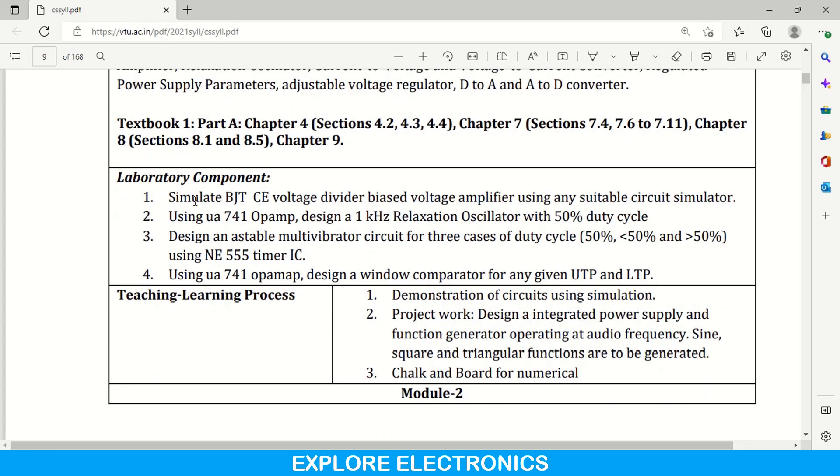And laboratory component is given here. Simulate BJT common emitter voltage divider biased voltage amplifier using suitable circuit simulator. Here we are supposed to use any simulator, circuit simulator to make the circuit and we need to simulate this circuit. And using the op-amp we need to design 1 kilohertz relaxation oscillator with 50% duty cycle and design a astable multivibrator circuit for 3 cases of duty cycles, different duty cycles they have given here. And using this 741 op-amp design a window comparator for given UTP and LTP. So, some of these concepts you have studied in basic electronics itself. Now they kept in this subject for laboratory component to simulate using any circuit simulator.